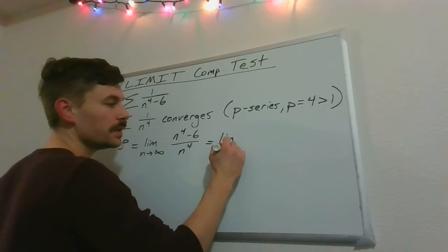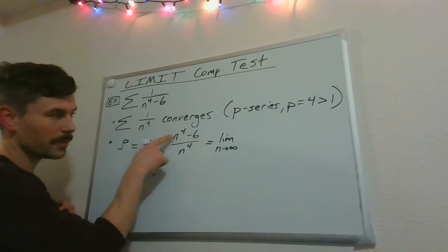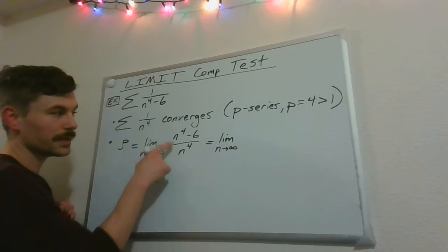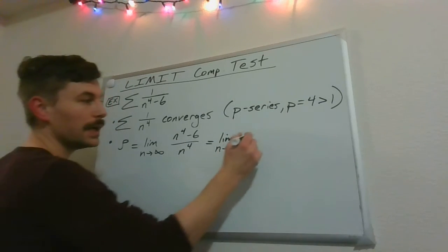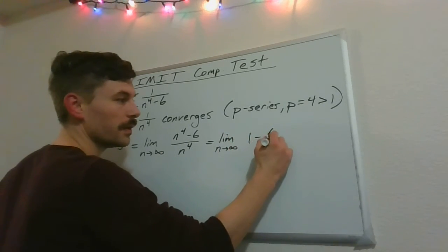The other way to do this, which is why I said, maybe putting this on the top and this on the bottom, I can split up the fraction, right? So n to the 4th over n to the 4th, that's 1 minus 6 over n to the 4th.